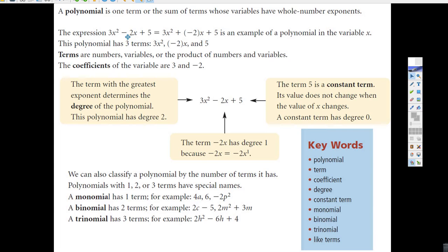So this expression is an example of a polynomial, 3x squared minus 2x plus 5. This polynomial has three terms, and we actually call it a trinomial because it's got three terms. The coefficients are the numbers in front. See that minus 2, it's a coefficient. 3 is a coefficient.